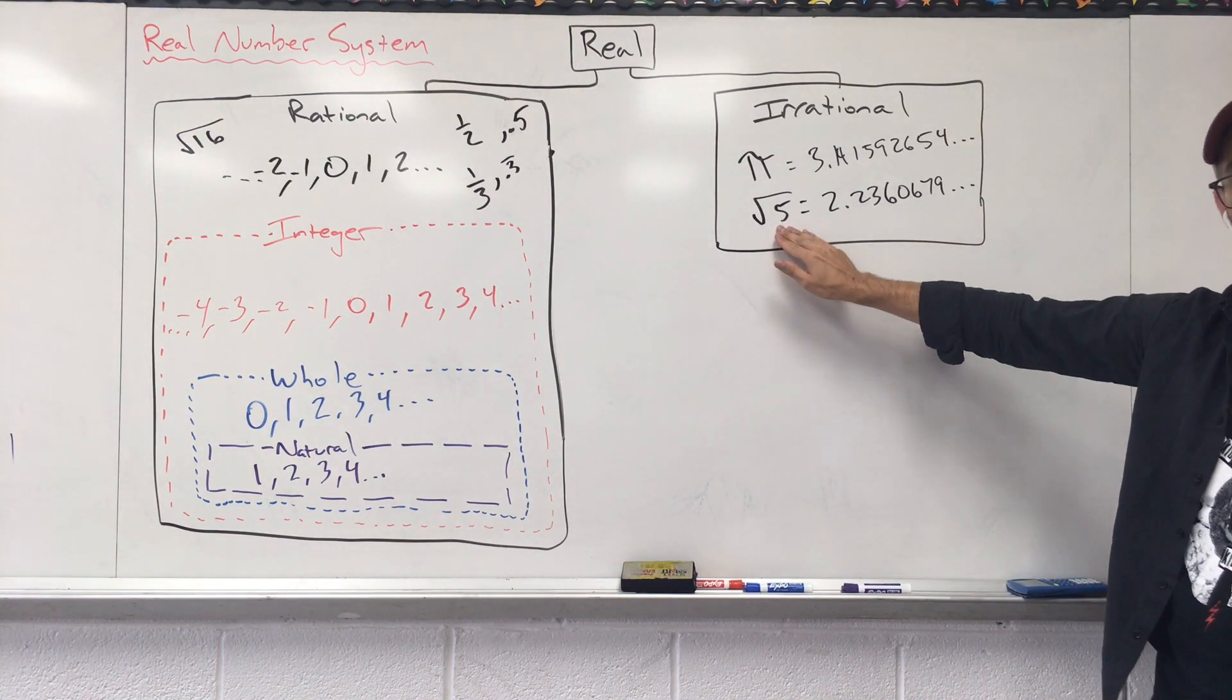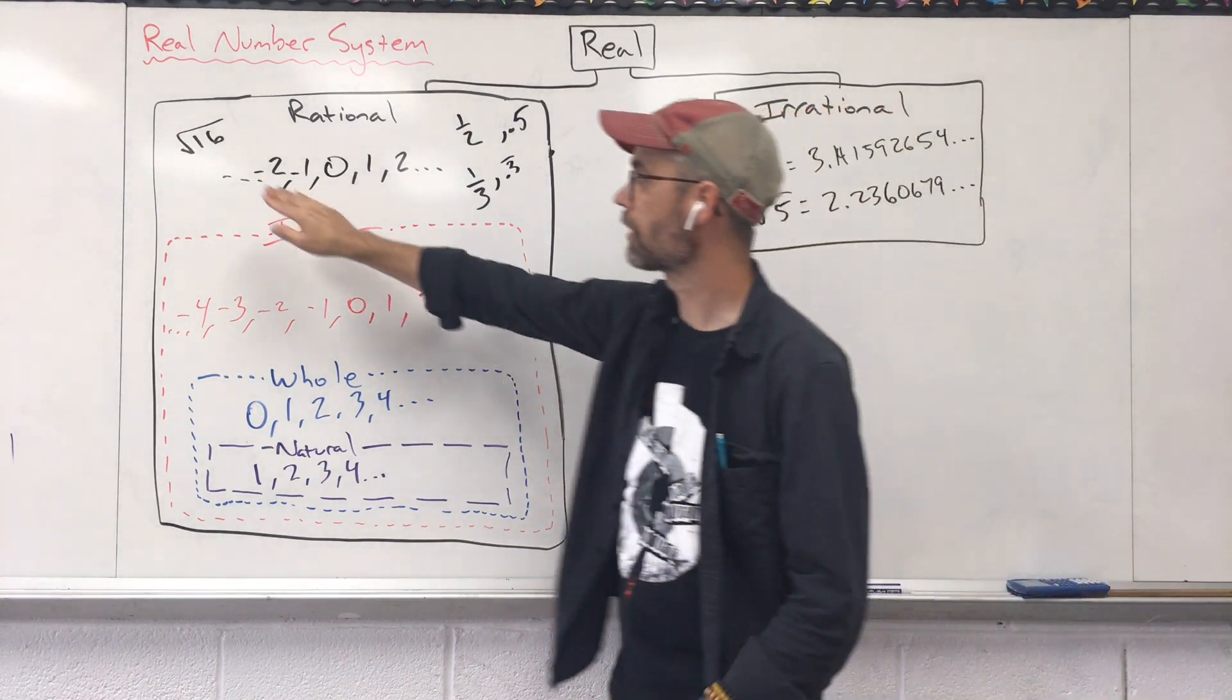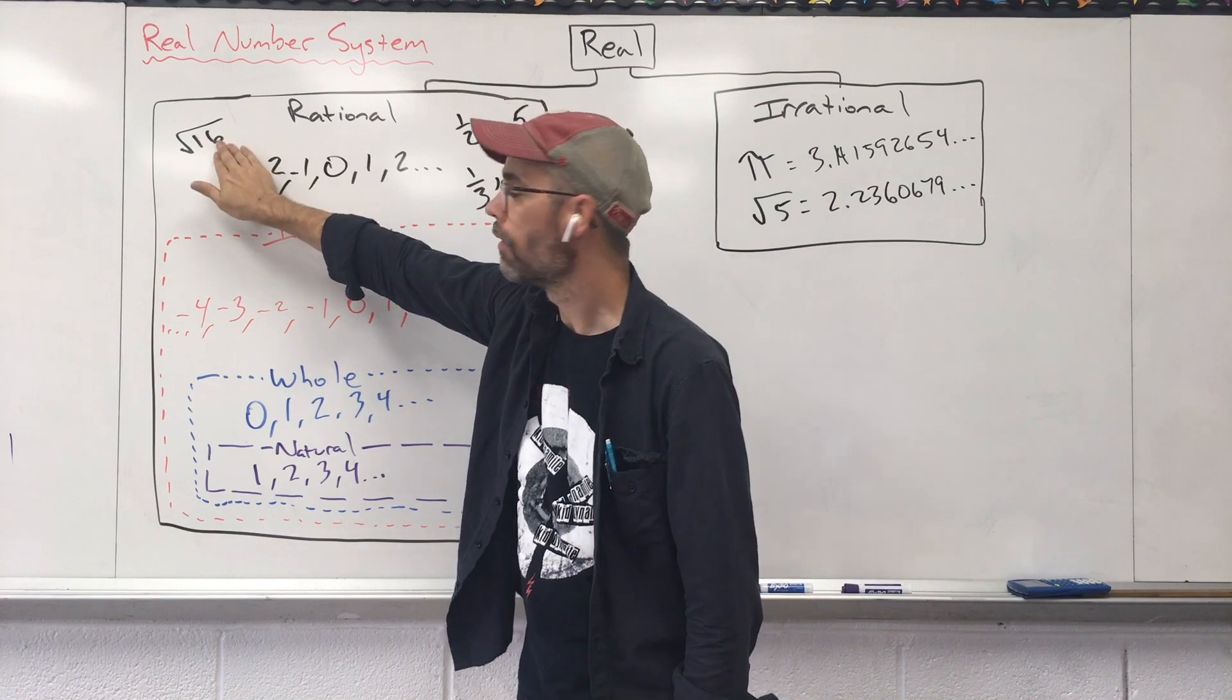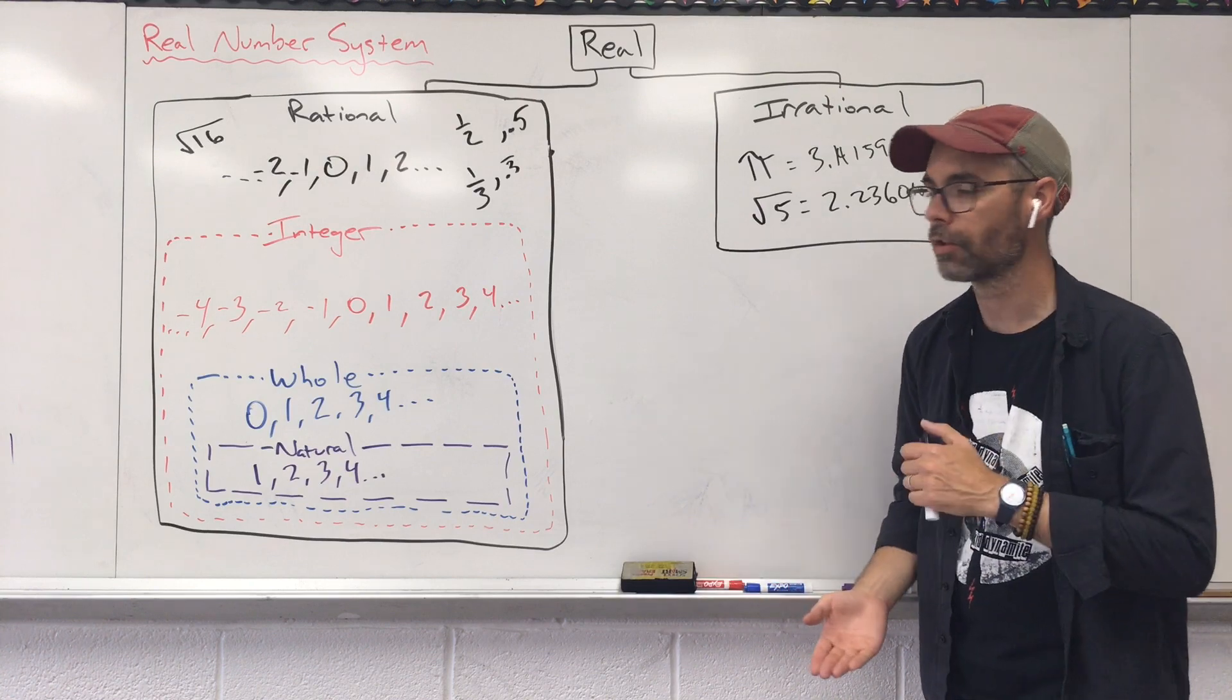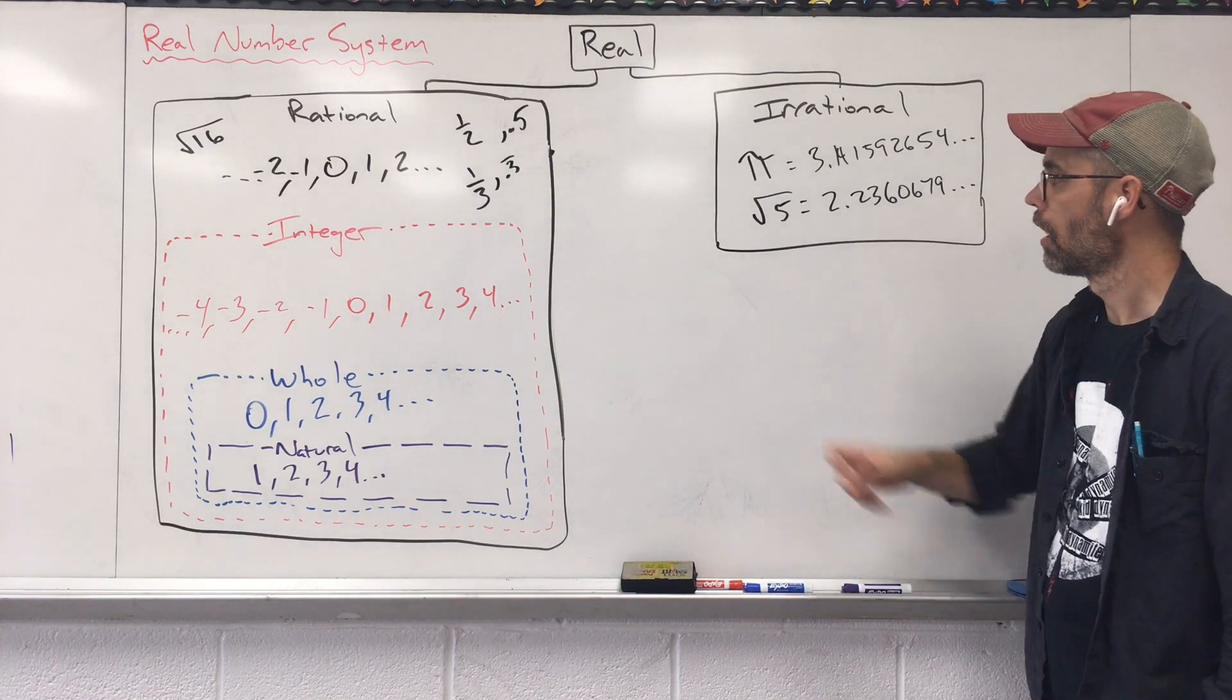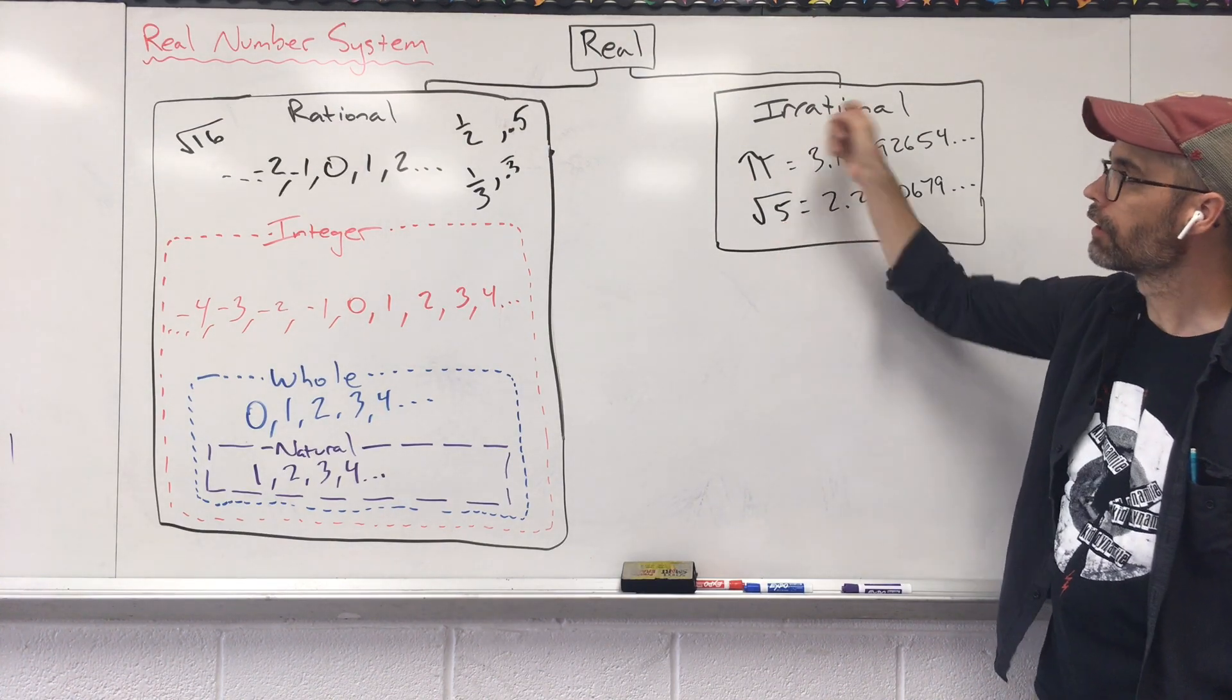Why is it that radical five is irrational? The radical 16 or square root of 16 is rational. Well, square root of 16 is something called a perfect square. There's a number times itself to get us to that. Five doesn't have that. When we find that decimal, it's crazy, irrational.